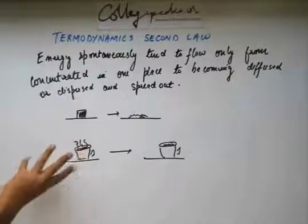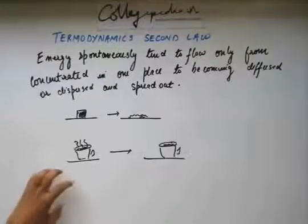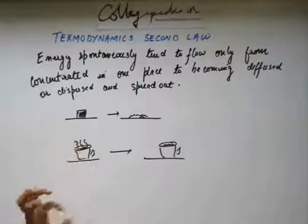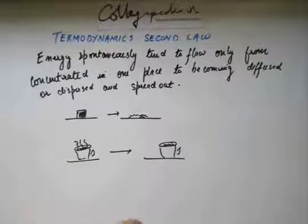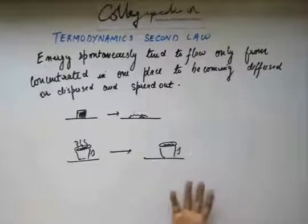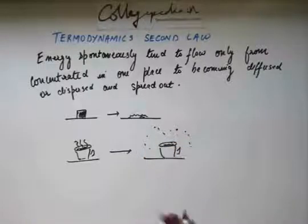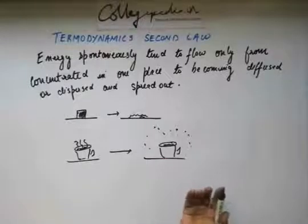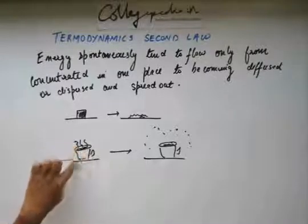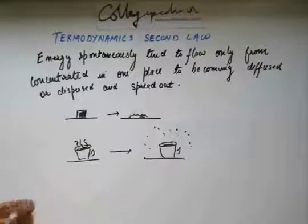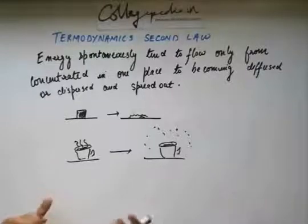The energy from this coffee is given out into the surrounding so that it comes down to room temperature. The coffee had thermal energy contained in the liquid, and that energy is gradually given out into the surroundings. The surrounding air molecules gain that energy and their kinetic energy is increased. So the energy which was contained in this small volume spreads out into millions and billions of molecules around the atmosphere. This is diffusion of energy.